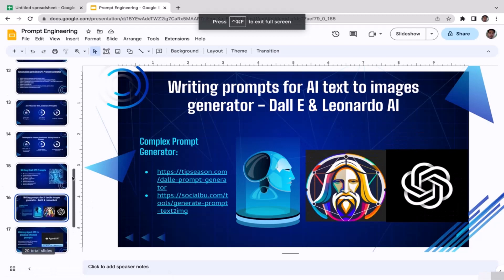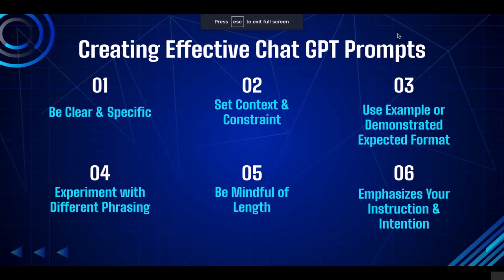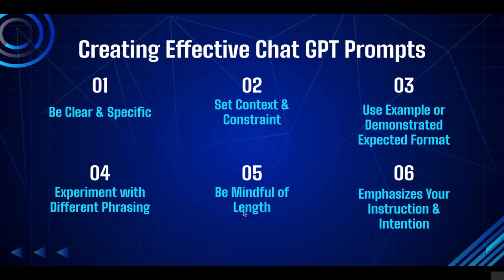If you're wondering how to create effective prompts for AI text-to-image generators, the rules are exactly the same as ChatGPT prompts. You need to be clear, specific, set context and constraints, and emphasize what output you're expecting. Also be mindful of length — it's fine to have a slightly longer prompt, but don't make it a full paragraph as that will confuse the AI.